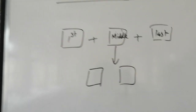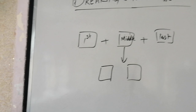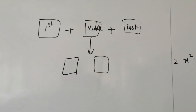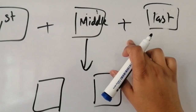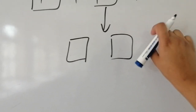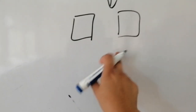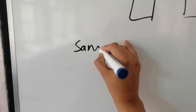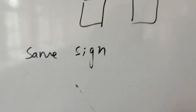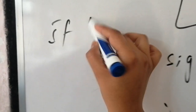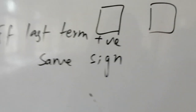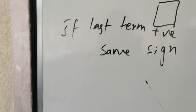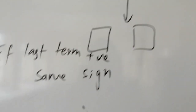When you break the middle term into two terms, you need to know the signs. If the last term is positive, then the two values will be the same sign — meaning both broken terms will share the same sign.